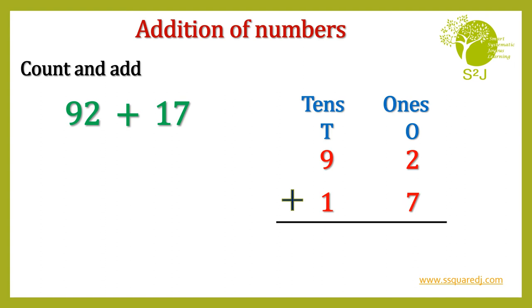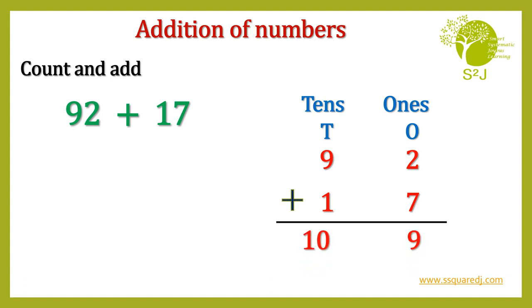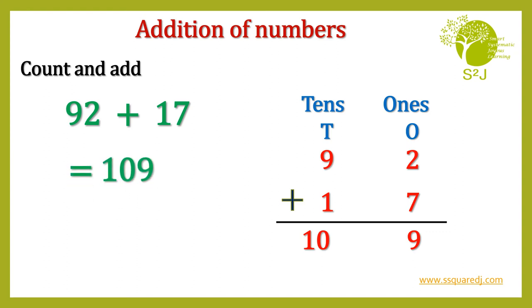Let's add them. 7 plus 2 is 9 and 9 plus 1 is 10. So 109. 92 plus 17 is 109.